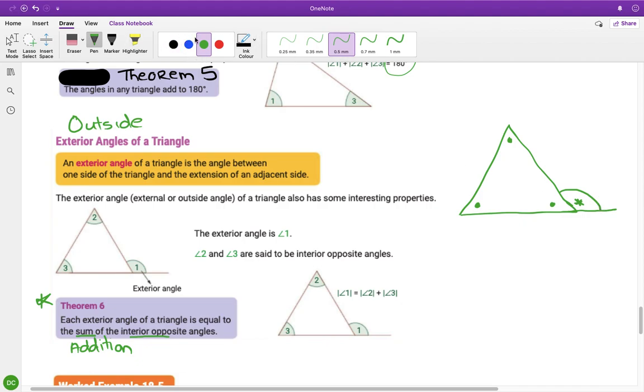And what the theorem says is that the exterior angle is equal to the addition or the sum of the interior opposite angles. So not this one because that's right beside it. It's the ones that are opposite to it. So you would take this one and add it to this one. This one would be considered adjacent to it, it's not opposite.